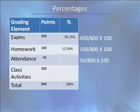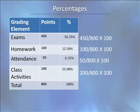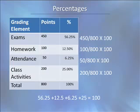We make the same computation for attendance and for class activities. Always make sure that the percentages for the elements total 100: 56.25% for exams, plus 12.5% for homework, plus 6.25% for attendance, plus 25% for class activities, equals 100%. There may be a minor difference in some problems due to rounding. If rounding is an issue, always determine how many decimal places should be used.